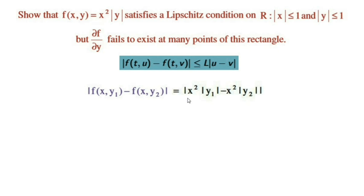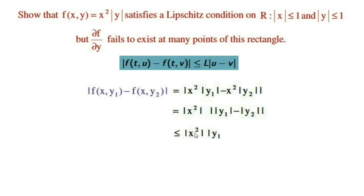That equals |x²| · ||y₁| - |y₂||. Here we have taken |x²| as a common factor. By the modulus property |ab| ≤ |a|·|b|, this gives |x²| · |y₁ - y₂|. Since |x| ≤ 1 implies |x²| ≤ 1, we get 1 · |y₁ - y₂| = |y₁ - y₂|.